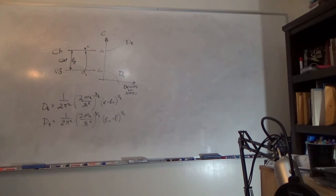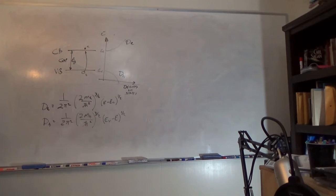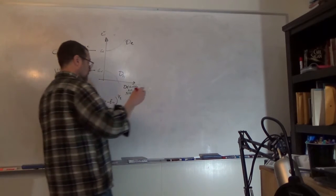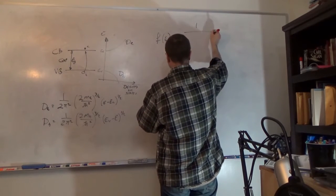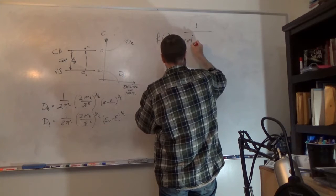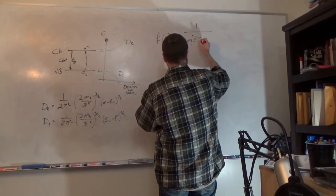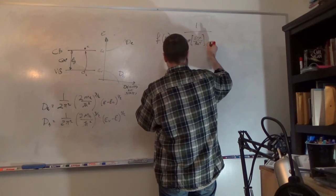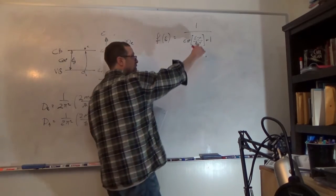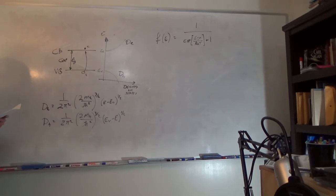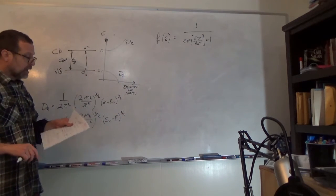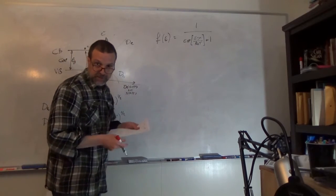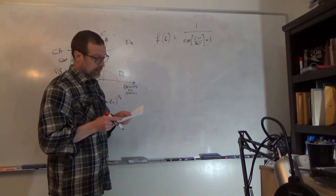If we think about the density of states — which we can lay on its side — it's not inappropriate to imagine our density of states as a free-electron density of states with a dependence that goes as E to the one-half. That's not universally true, but at the band edges it's a pretty good approximation. So the density of states of electrons in the conduction band and the density of holes in the valence band will go as (1/2π²)(2m_e/ℏ²)^(3/2) (E − E_c)^(1/2), where E_c is the energy of the conduction band edge.